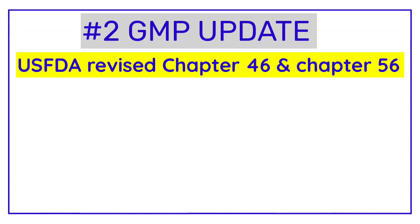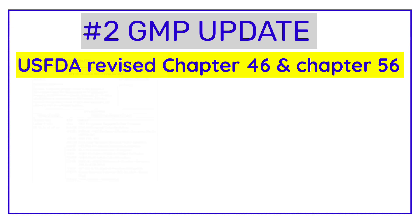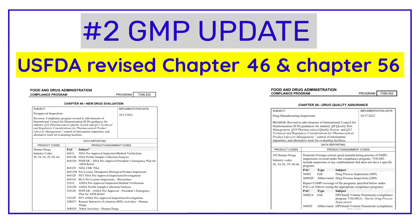GMP Update Number Two is for pharma professionals who handle audits and compliance. USFDA has updated two GMP inspection-related guidelines: Chapter 46 and Chapter 56. These are called CPGs — Compliance Program Guides. The title of Chapter 46 is 'New Drug Evaluation' and the title of Chapter 56 is 'Drug Quality Assurance.' Chapter 46 deals with pre-approval inspections, whereas Chapter 56 deals with routine surveillance inspections.